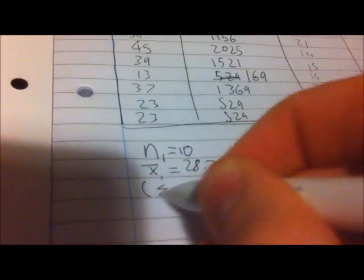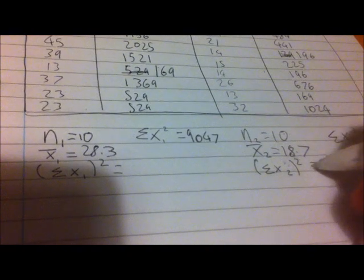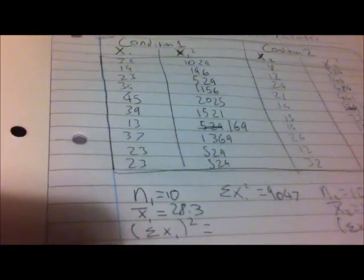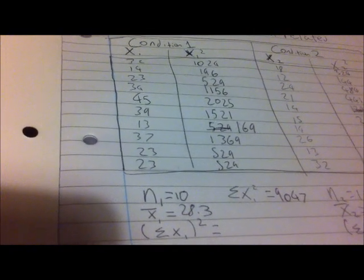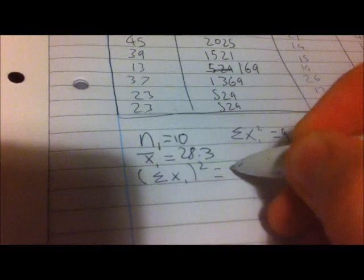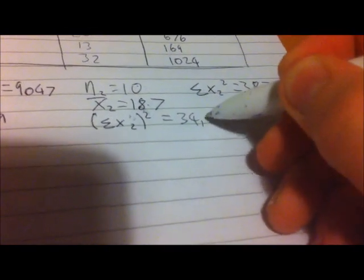Then the final thing you need to work out with this little bit is all of the values for condition 1 squared. So you add all the values up and then you square them, and then you have to work that out for this one too. This is so fucking hard to write and hold the camera, which is actually my iPhone. Okay then, what you do is you just add all these up really. So when you were getting the mean, you could just times the mean by 10, couldn't you? So it's 283 - I think 28.3 times 10, yeah, 283 - and you square that, which is 80089. Brilliant mental maths there. And this one, 187 squared is 34969. That seems like a bigger number.